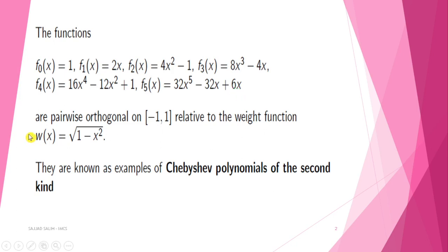are pairwise orthogonal on the interval [-1, 1] relative to the weight function w(x) = √(1 - x²). They are known as examples of Chebyshev polynomials of the second kind.